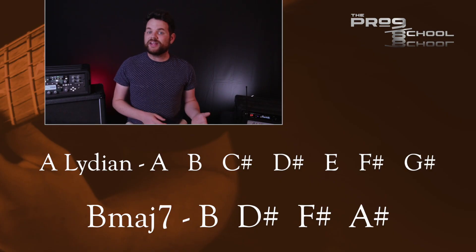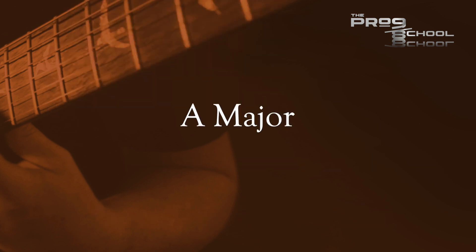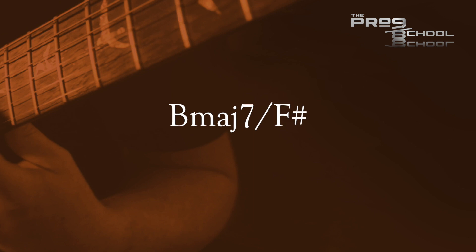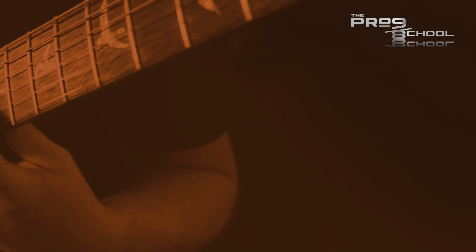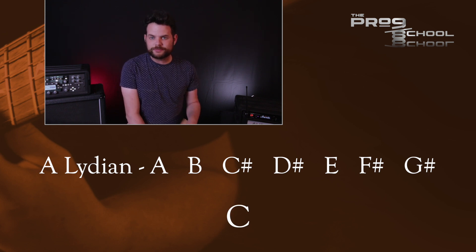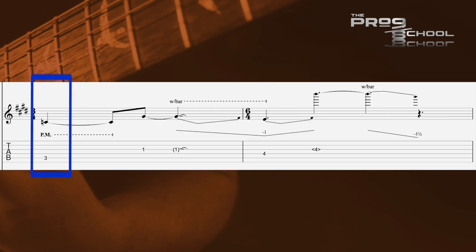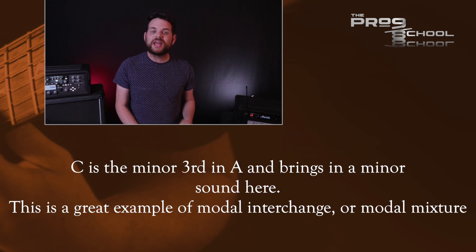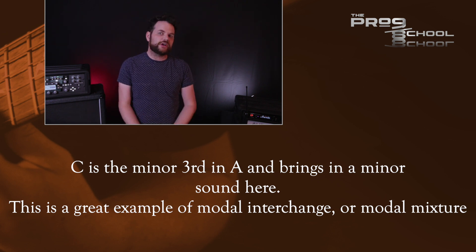We stay in Lydian for most of the first half of the song, except for a few quick moments. At one minute and thirty seconds, there's a B major seven chord with an A sharp, giving a very uplifting sound. Pliny also introduces a C natural in a few spots, most notably at one minute and forty-two seconds. This is the minor third in A and brings in a bit of a minor sound. Some basic modal interchange like this can introduce different moods when desired, and there are a lot of cool extended chords throughout this first section as well.